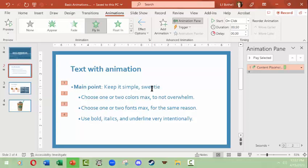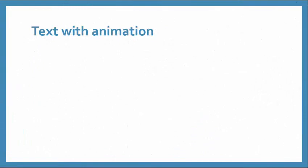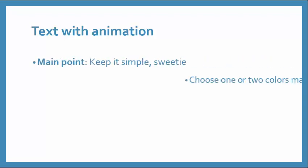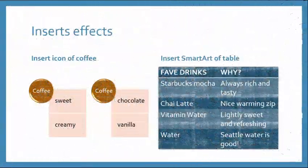On click is good if you're talking in front of people and want to make one point at a time. You can also time things: 'with previous' brings everything in at once, and 'after previous' brings items in with a time delay after you click the first one. We'll stick with on click. Let's run this slide from the status bar — we've transitioned to the page, it reads 'text with animation,' and nothing is happening until I click: one line came in, then the next, the third, and the fourth.